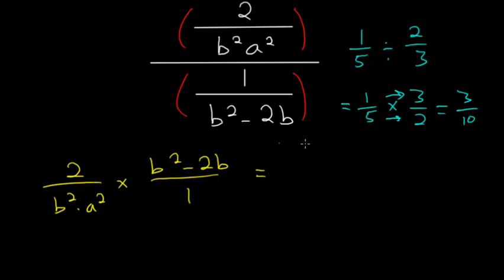Now we just multiply straight across, and I'll distribute this 2 to each of these. So we have 2b squared minus 4b all divided by b squared times a squared.